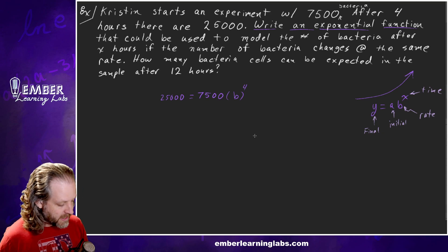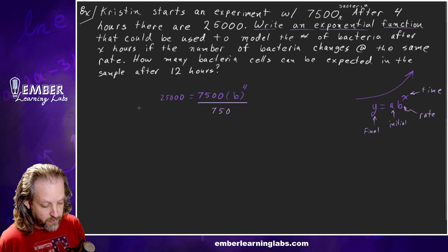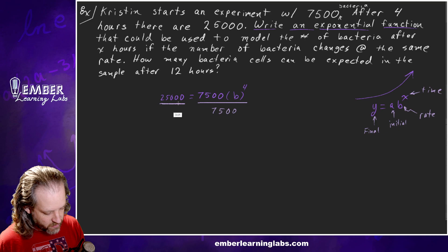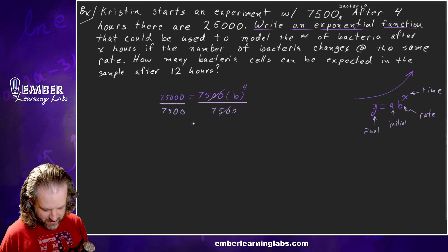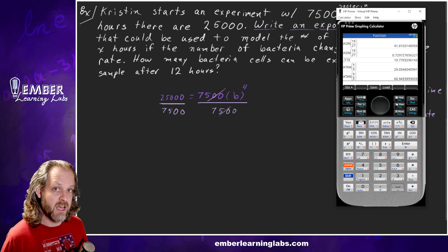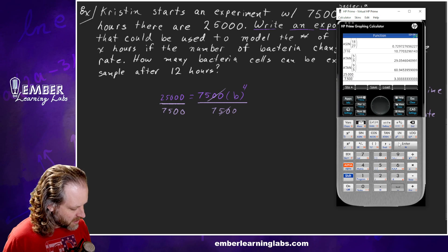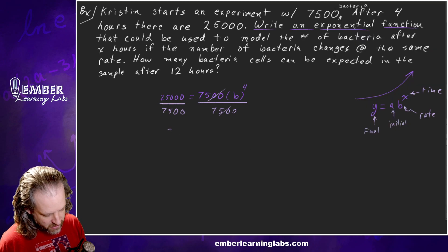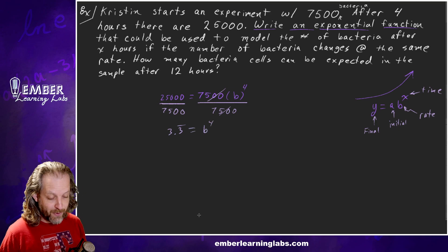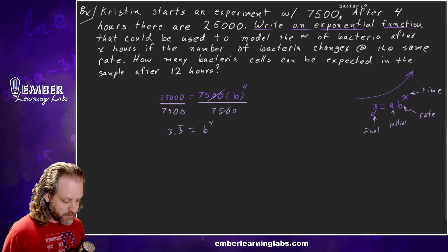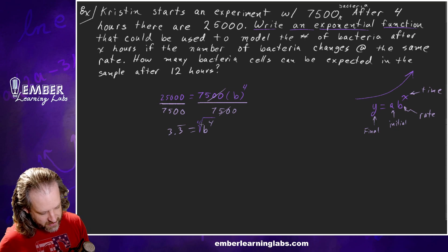So let's solve this equation for b. We need to divide both sides by 7,500 to isolate our b to the fourth. You could take the fourth root of everything first, but that's not generally what we want to do. Let's grab our calculator instead. 25,000 divided by 7,500 equals 3 and one-third, 3.3 repeating equals b^4. How do we get rid of that fourth? We could raise it to the one-fourth, if we used rational exponents, or we could think about it as taking the fourth root. You could think about that either way.